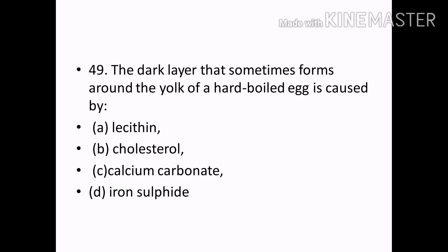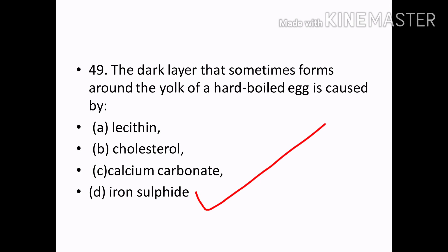The dark layer that sometimes forms around the yolk of a hard-boiled egg is caused by: Options — Lecithin, Cholesterol, Calcium carbonate, Iron sulfate. Correct answer: Option D — Iron sulfate.